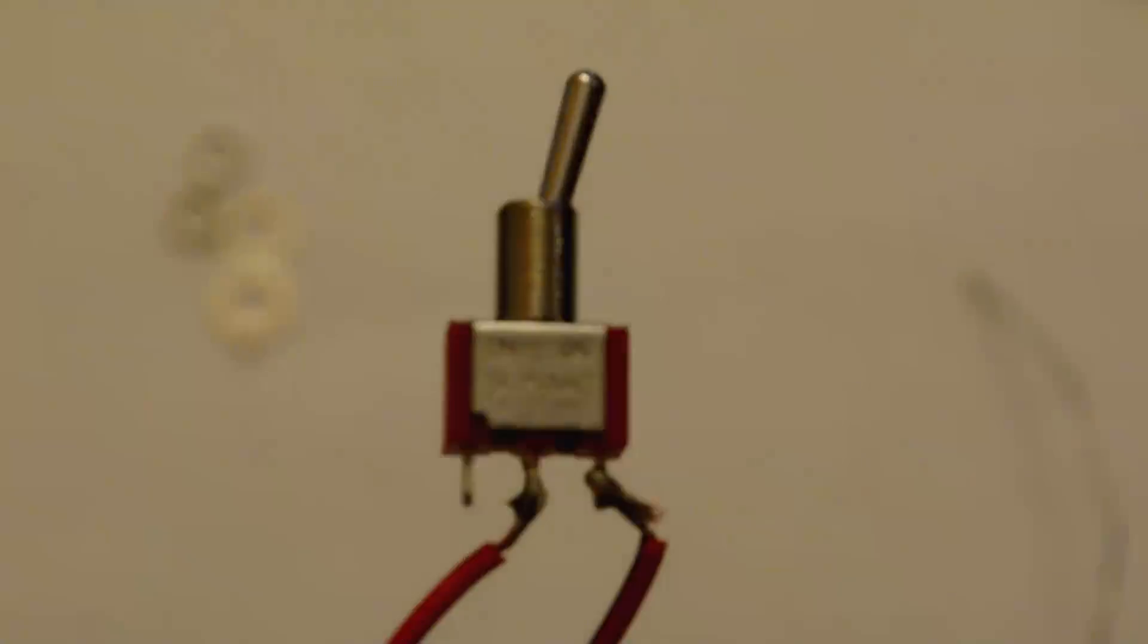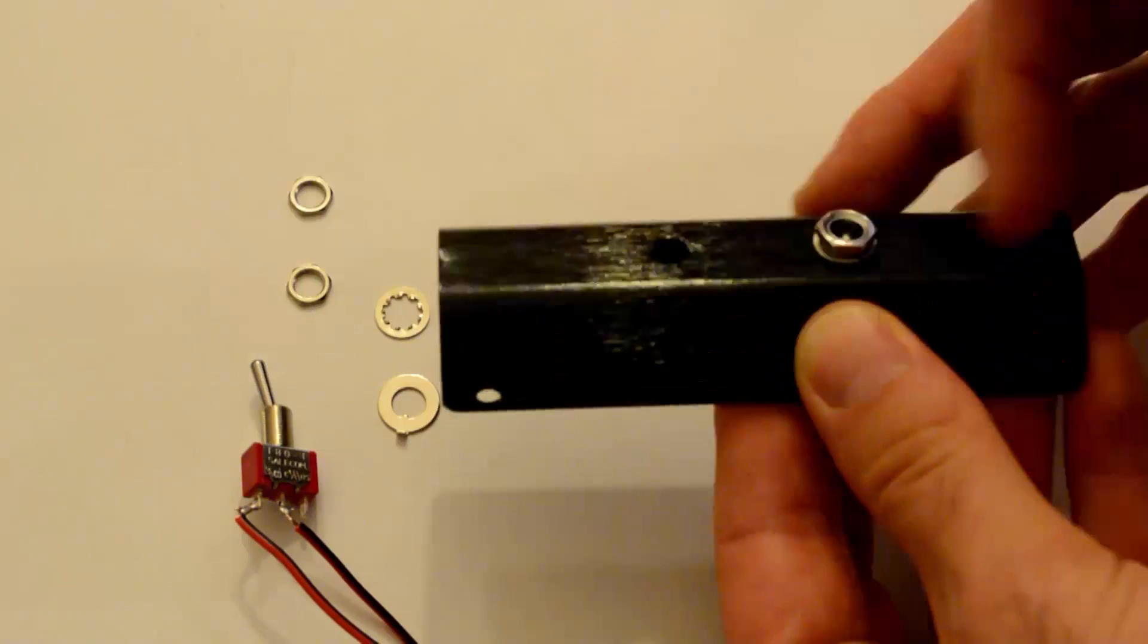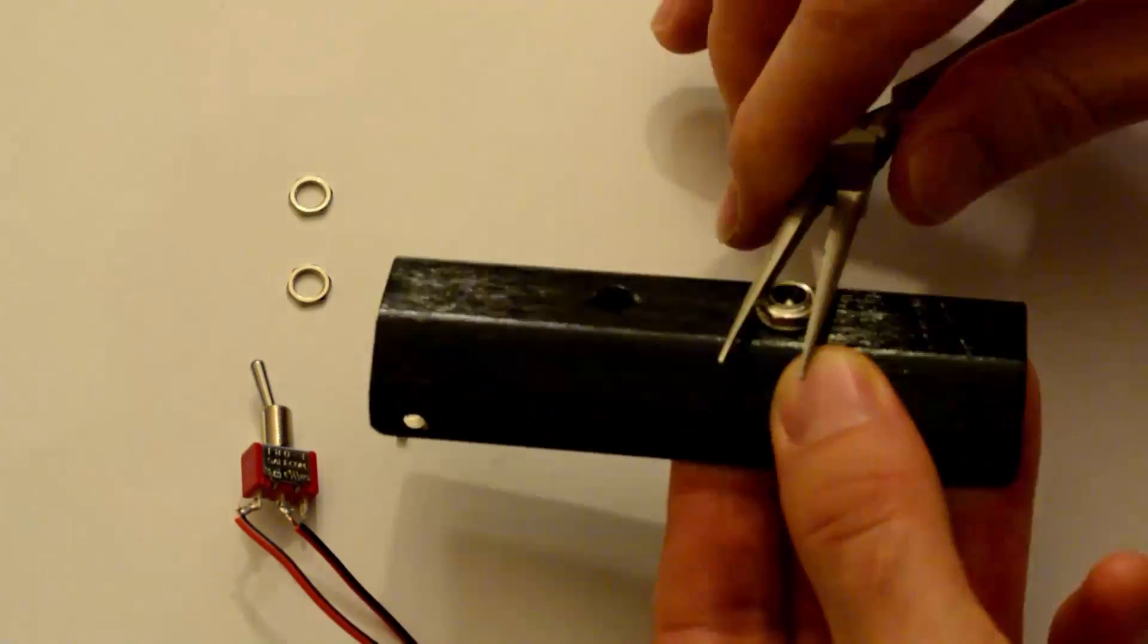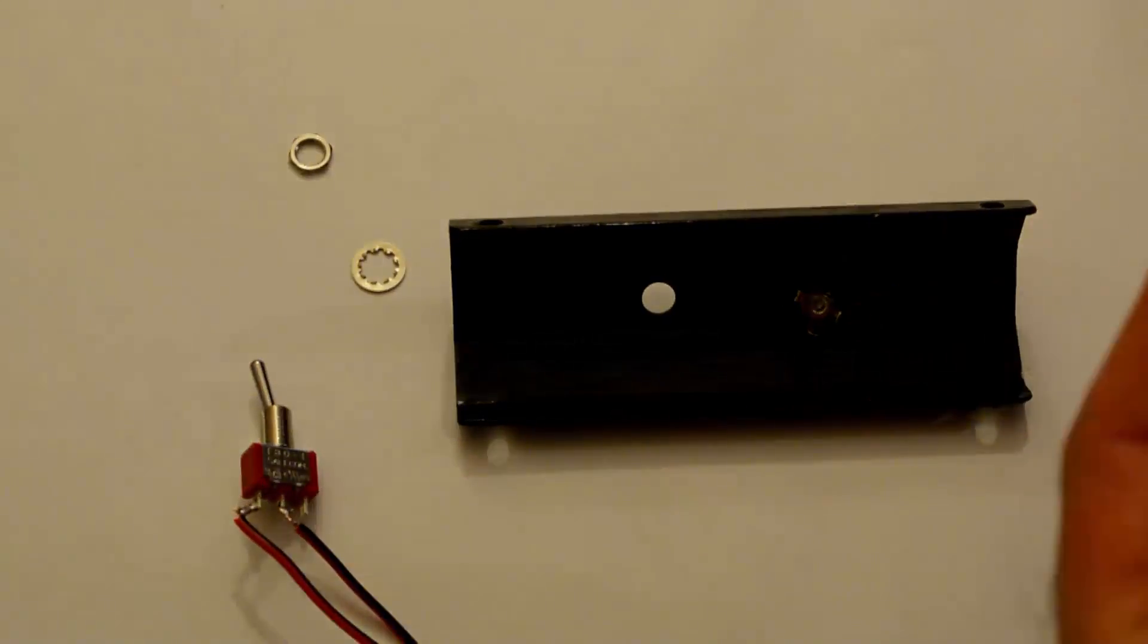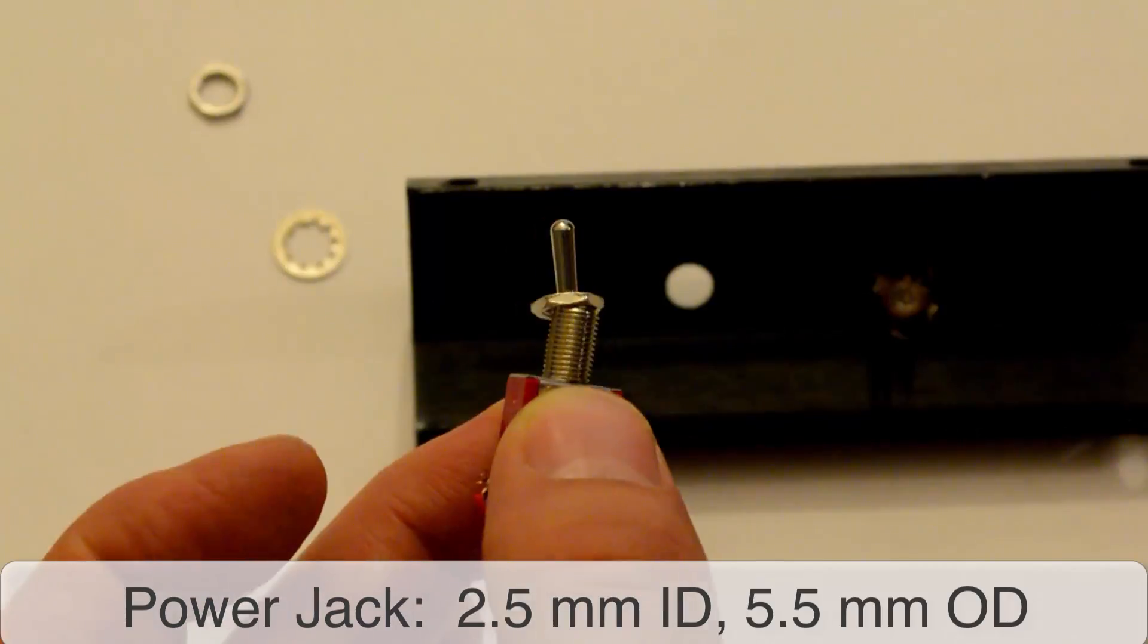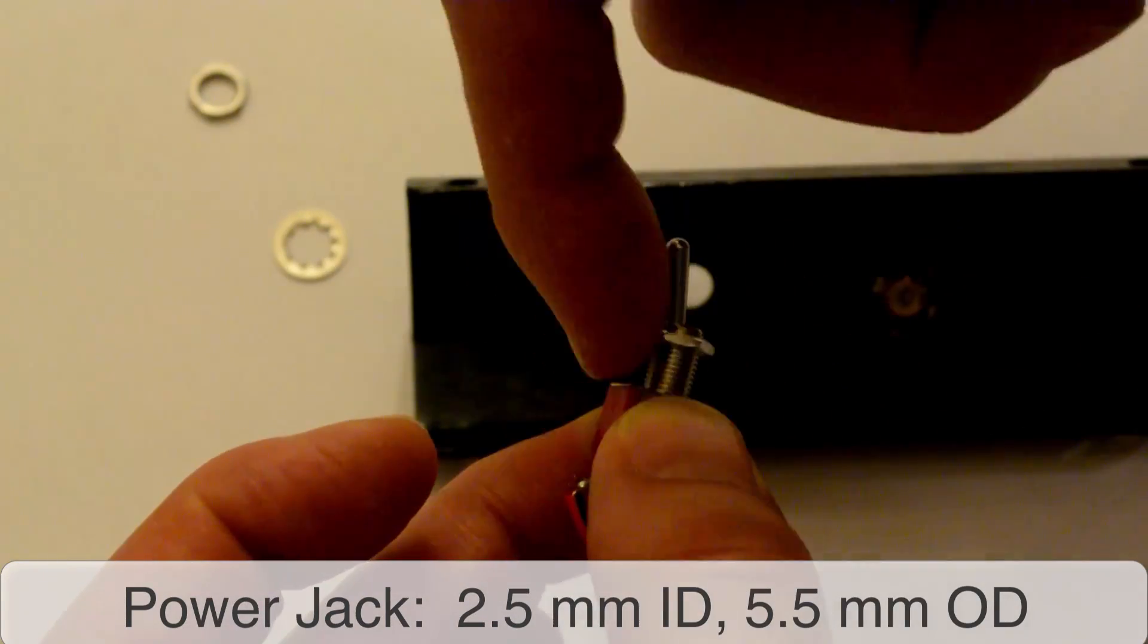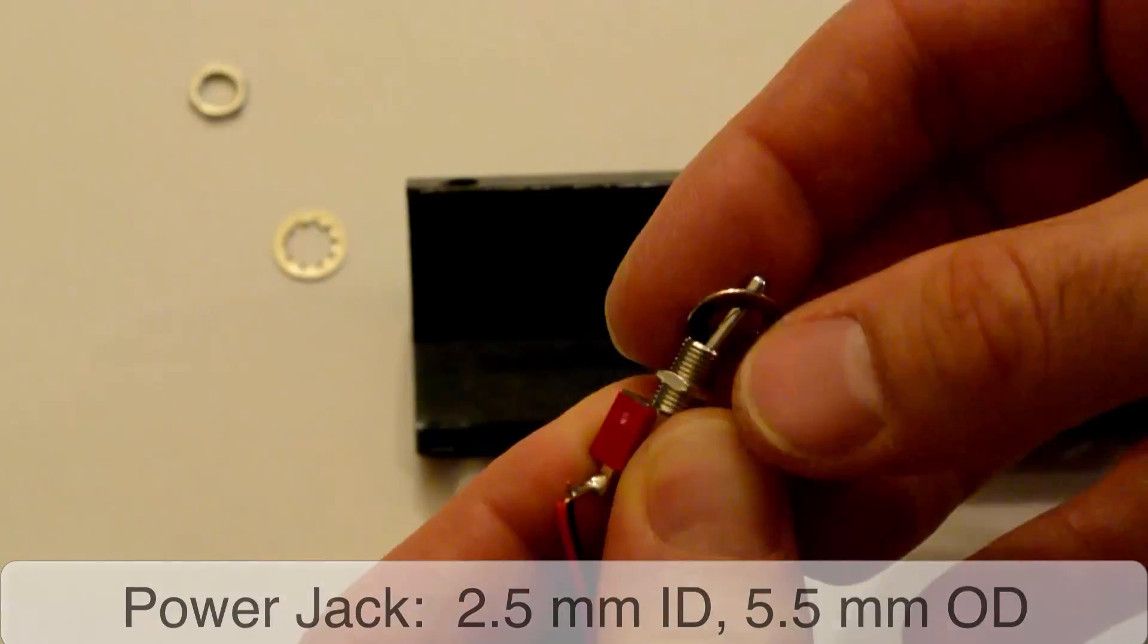The kit also comes with a power jack. Since I didn't plan to use this, I didn't wire it up. If you're looking to use this for external batteries and need a male plug to work with it, the female jack side that you get with the kit appears to have a standard 2.5 millimeter inside diameter and a 5.5 millimeter outside diameter. And that's the best that I could gauge with my calipers.